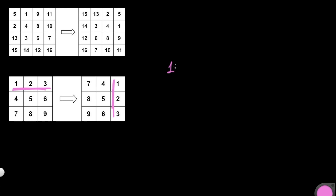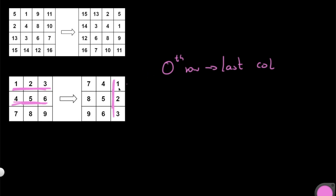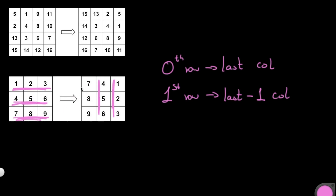We have two examples and let's start with the smaller one. Imagine you have this image and you're rotating it — how do the pixels move? You can think of these values as pixels. In this case, 1, 2, and 3 — when you rotate them, the first row ends up becoming the last column. Using zero indexing, the zeroth row becomes the last column, the first row (4, 5, 6) becomes the last-minus-one column.